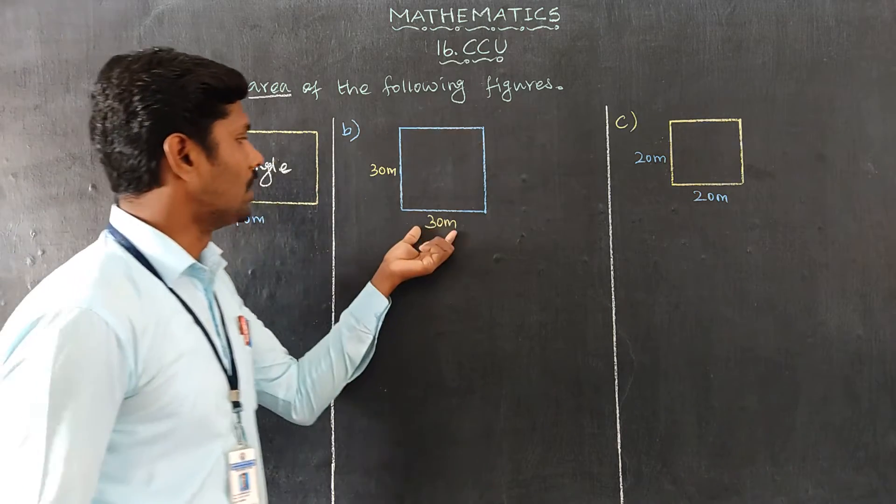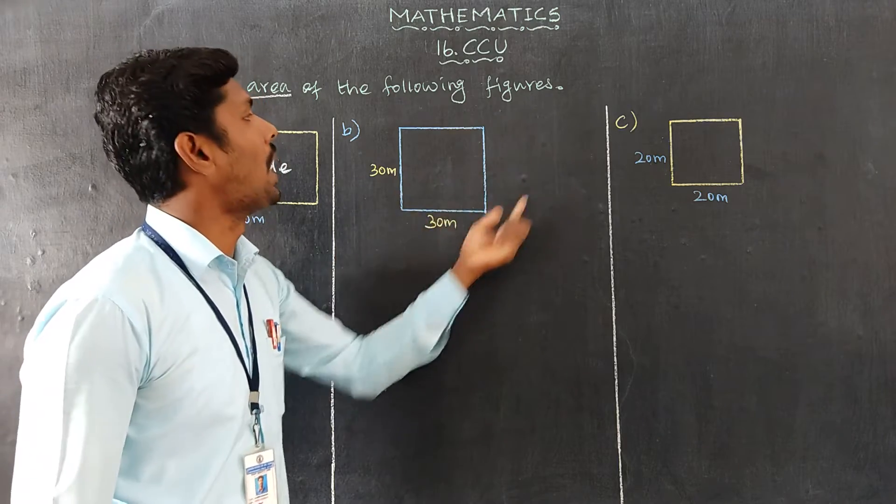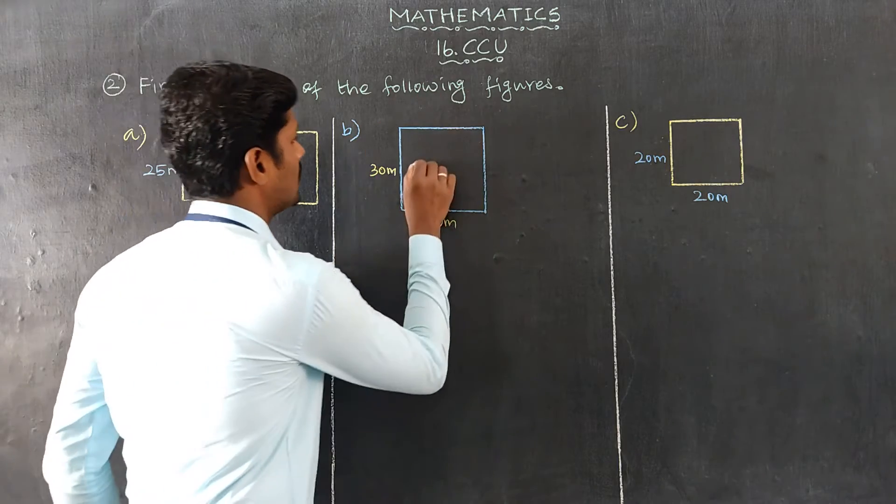Next, 30 meters. This is 30 meters. All sides are equal, so this is a square.